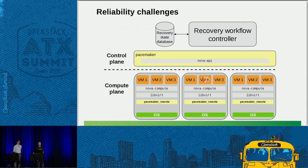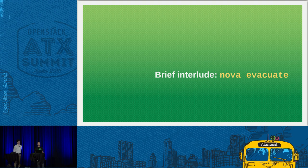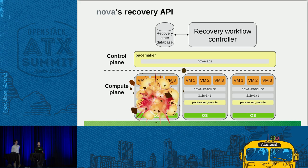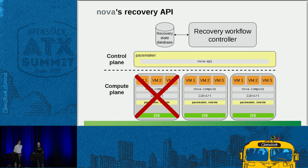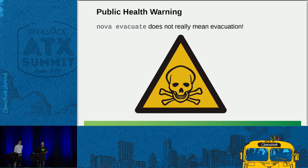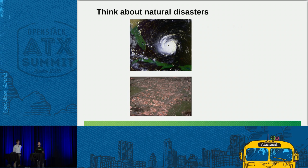This is a good time to introduce something called nova evacuate. If we have a compute node failure, after fencing the node we need to resurrect the VMs in a way which OpenStack is aware of. Luckily, Nova provides an API for doing this called nova evacuate — we just call that API and Nova takes care of the rest. If we don't have shared storage it can still work; it will simply rebuild the VM from scratch on another compute node. I need to give a public health warning though: nova evacuate doesn't really mean evacuation. It's slightly confusing.